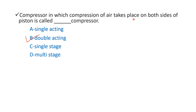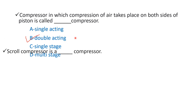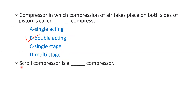Double acting compressor mein compression of air takes place on both sides of the piston — yani piston ke dono side se compression ho raha hai — to hum usko bolenge double acting compressor.